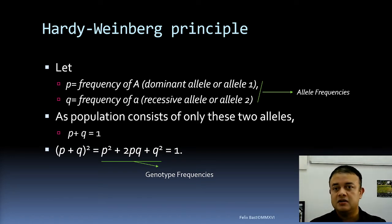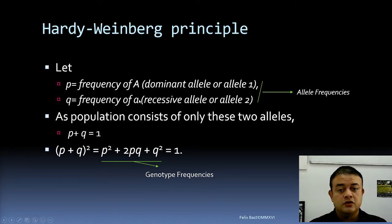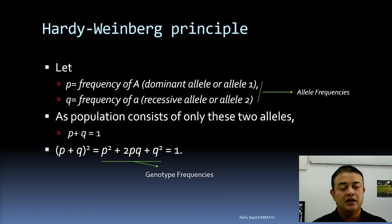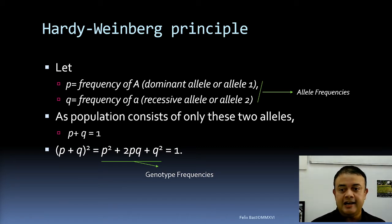Let p be the frequency of allele A — the dominant allele — while q is the frequency of small a, the recessive allele. Alternatively, you can call them allele one and allele two, which is more accurate and accommodates co-dominant variants. In diploid organisms like humans, most sexually reproducing organisms are diploid, and there are only two versions of a gene — called alleles.